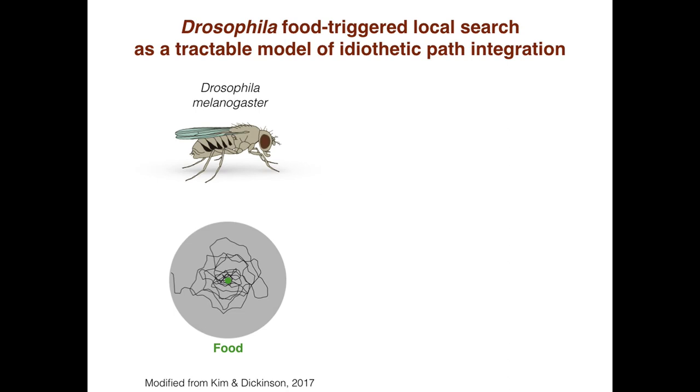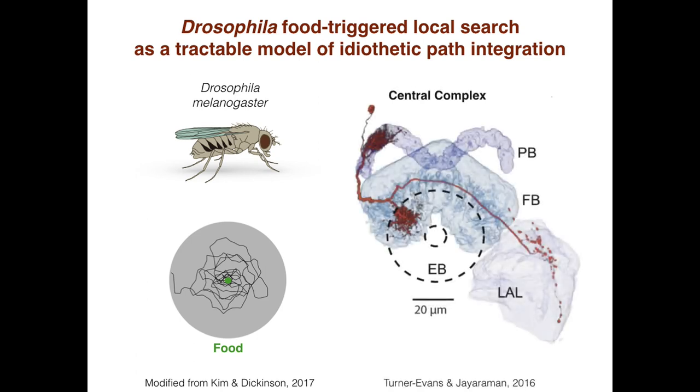The neural basis of path integration is not known, but food-triggered local search in Drosophila offers a tractable model system to study the circuits supporting this navigational ability. For example, recent studies have pointed to the importance of the central complex, a highly conserved set of structures in the insect brain.